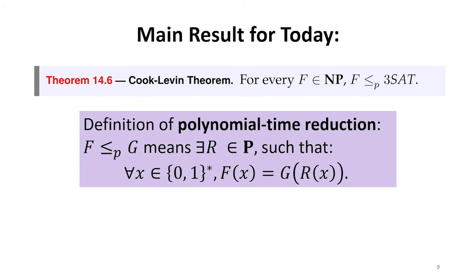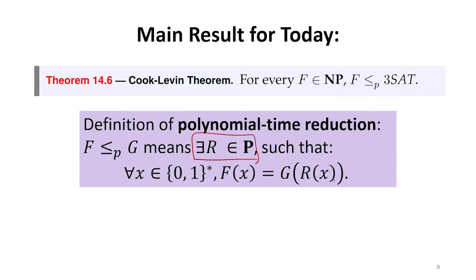Polynomial time reductions just mean there is some function that is in P, so P is things that we can do in polynomial time, such that we can transform the input that we had for F. So we're trying to show that we can solve X using G, that we can get the right output for F of X by running G on R of X. That means that whatever time it takes to run G, we can solve X in the time it takes to run G plus some amount of time that it takes to run R, which is a polynomial in this case.